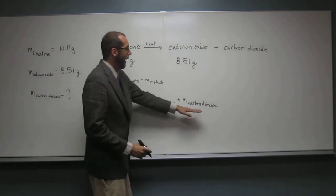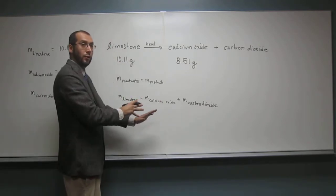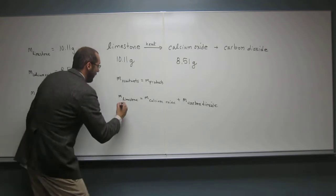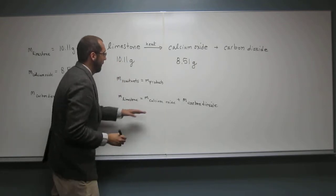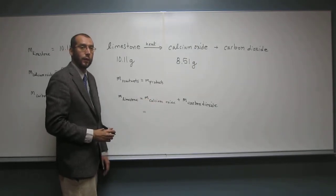So we want the mass of the carbon dioxide, right? So we need to rearrange this equation. Do you remember your algebra to rearrange your equations? So we're going to rearrange this to say what? We're going to subtract mass of calcium oxide from both sides. So, in other words,